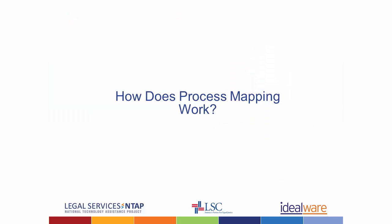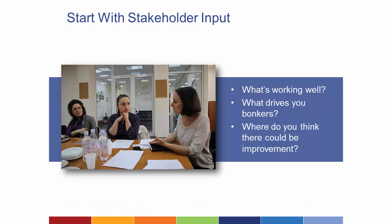Let's talk about how it works, starting with stakeholder input. You'll talk about what's working and what isn't. A great question to start with is just what drives you nuts. For stakeholder input, you might use surveys, focus groups, interviews, or other ways of receiving input from individuals involved. You can ask them details about exactly what they do, but also where they think there could be improvement. That may give you clues about which processes to start with.